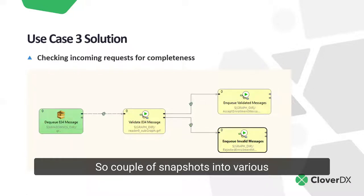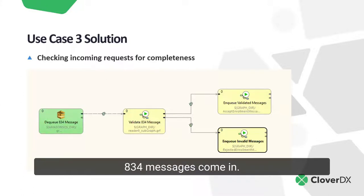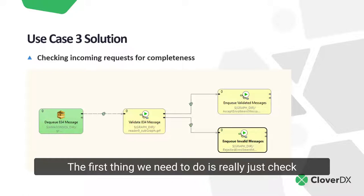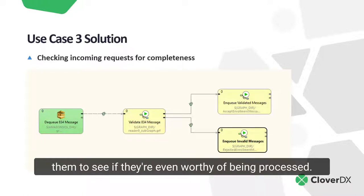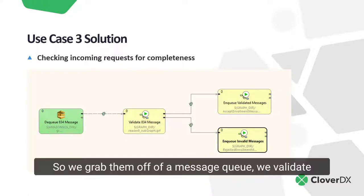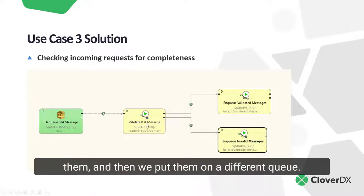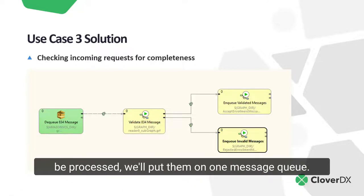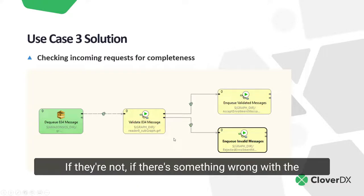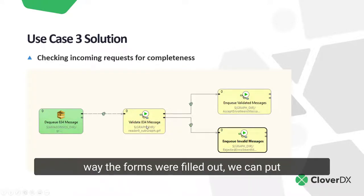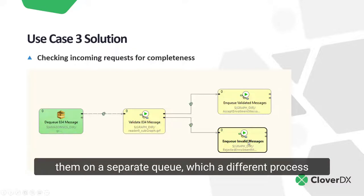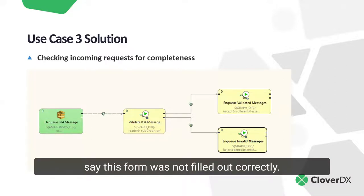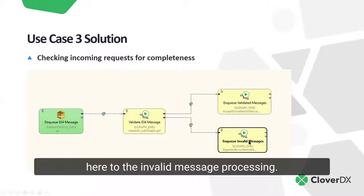So a couple of snapshots into various parts of this particular case. This is the very beginning — 834 messages come in. The first thing we need to do is check them to see if they're even worthy of being processed. So we grab them off of a message queue, we validate them, and then we put them on a different queue. If they passed validation and can be processed, we'll put them on one message queue. If there's something wrong with the way the forms were filled out, we put them on a separate queue, which a different process can pick up and send back.